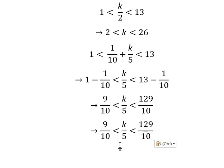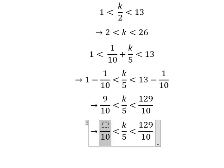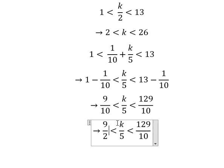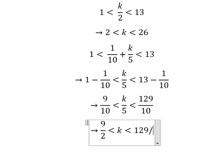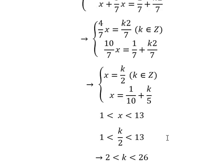Later, we multiply both sides by number 5 and we have like this. For the first one, we know that should be from number 2 to number 26.